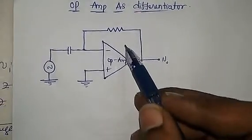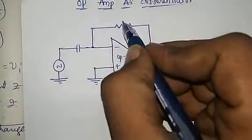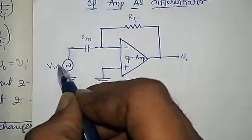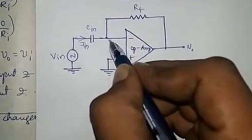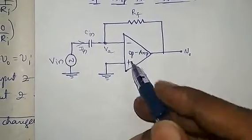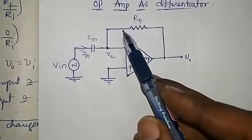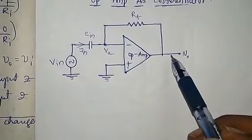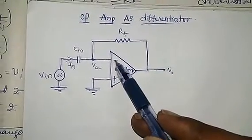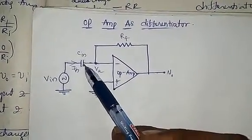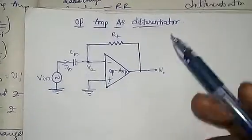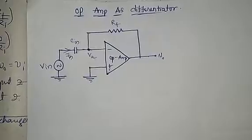This is the circuit diagram for a differentiator op-amp. This is the feedback resistor and this is the input capacitor C_in. The voltage at this point is VA. This is the inverting terminal. The non-inverting terminal is connected to ground. The feedback resistor is connected across the inverting terminal. In a differentiator, we connect the capacitor at the input, whereas in an integrator we connect the capacitor at the feedback.